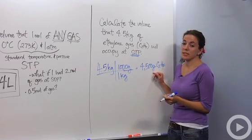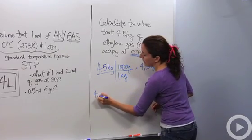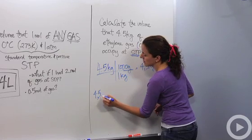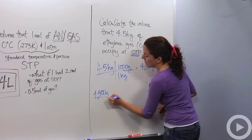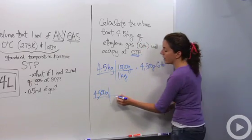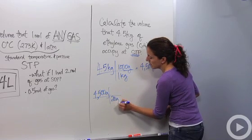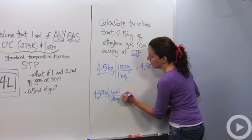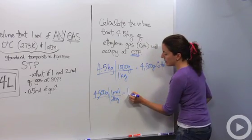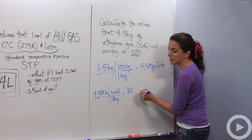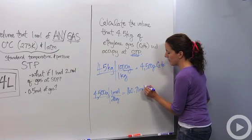Let's then change these grams to moles. So we have 4,500. I know my molar mass of ethylene is 28. So we have 28 grams for every one mole. And so now I know that I have 160.71 moles of C2H4.